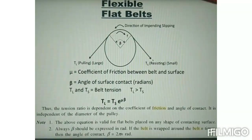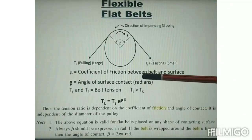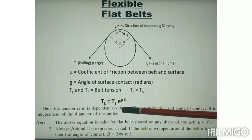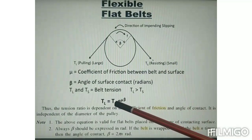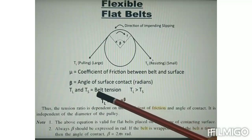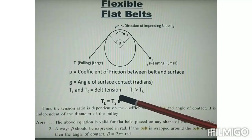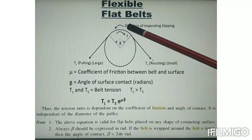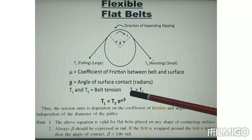Upon derivation, we can develop a relationship between the tension on the tight side and the tension on the slack side. The final equation is: TL = TS × e^(μβ), where TL is the tension on the tight side, TS is the tension on the slack side, μ is the coefficient of friction between the belt and pulley, and β is the angle of surface contact in radians.